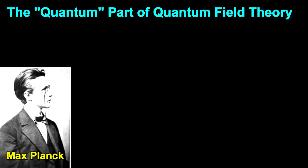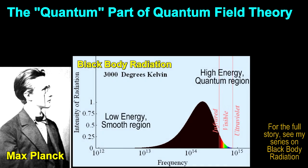Max Planck was the first one to notice this when he was trying to solve the mystery of black body radiation. Classical smooth ideas worked well for the low energy part of the spectrum, but completely failed in the high energy ultraviolet region. It was the ultraviolet catastrophe.